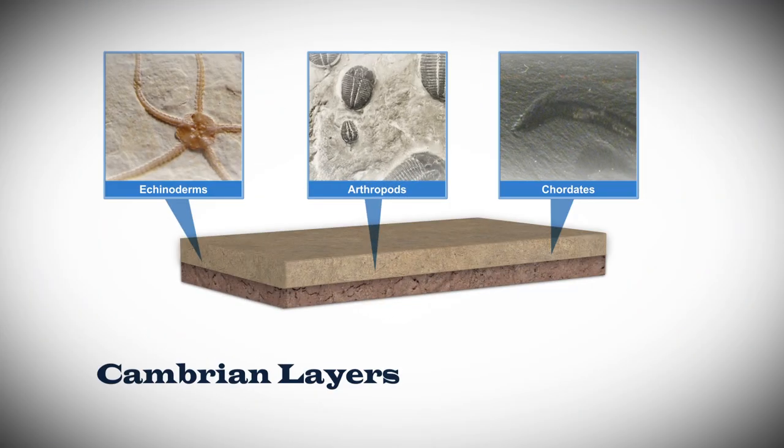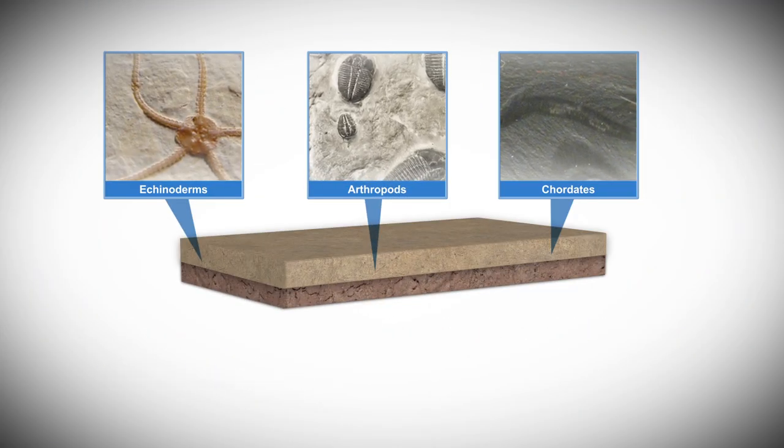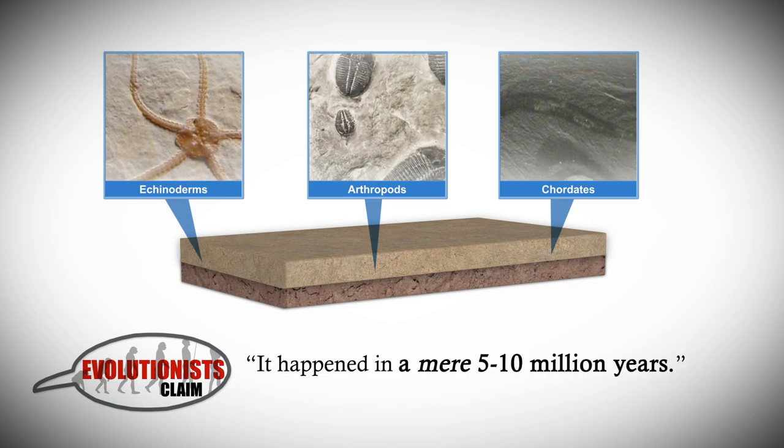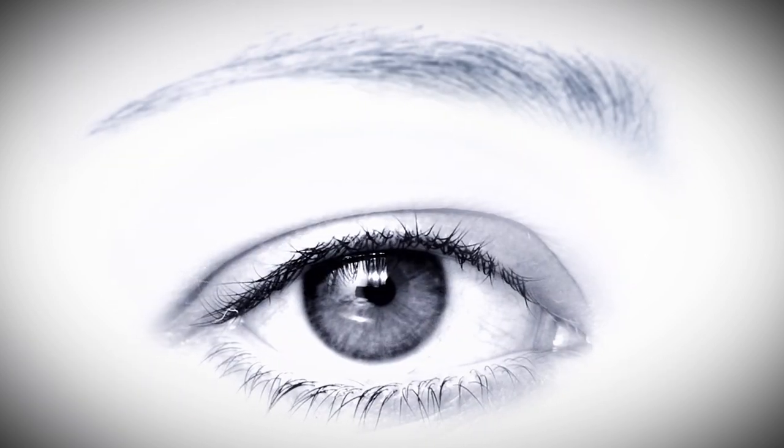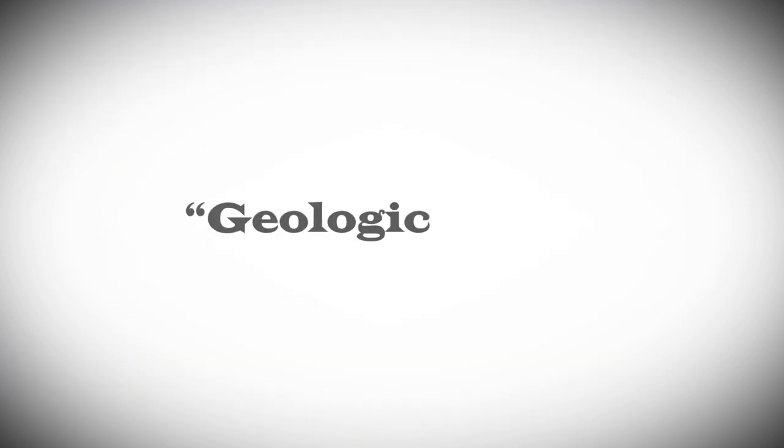The Cambrian layers show an amazing amount of diversity and complexity. Evolutionists claim it happened in a mere 5 to 10 million years, the equivalent to a blink of an eye in so-called geologic time.